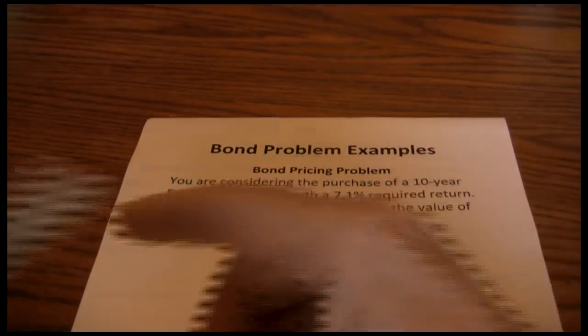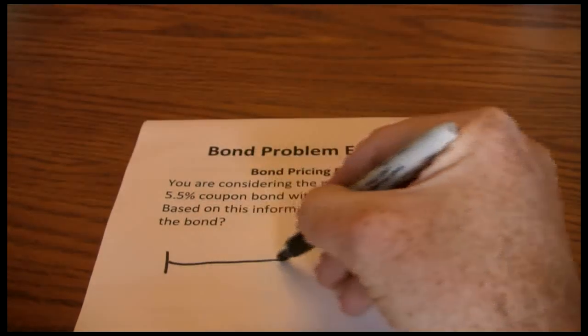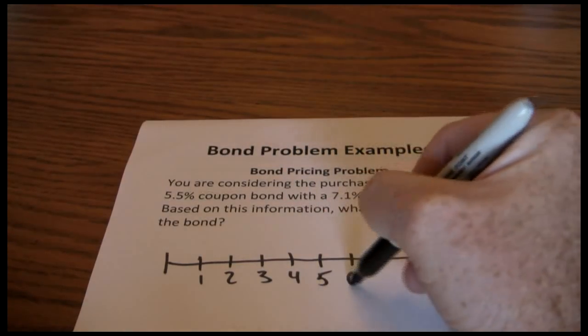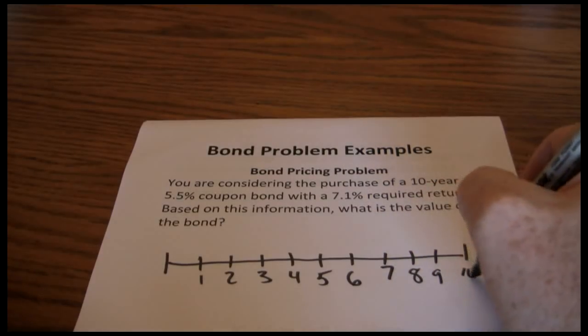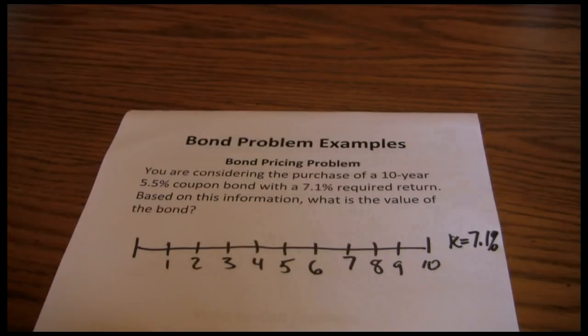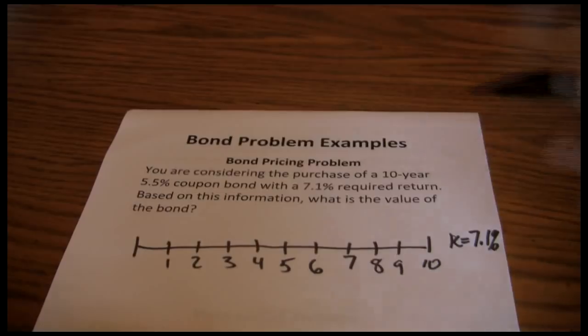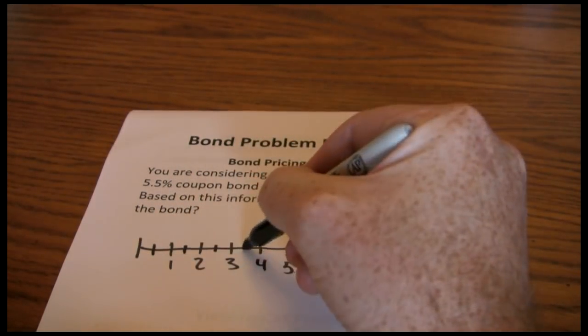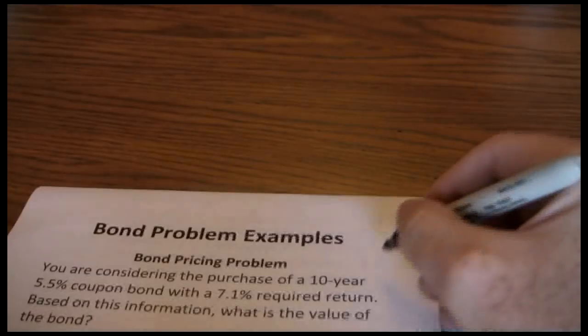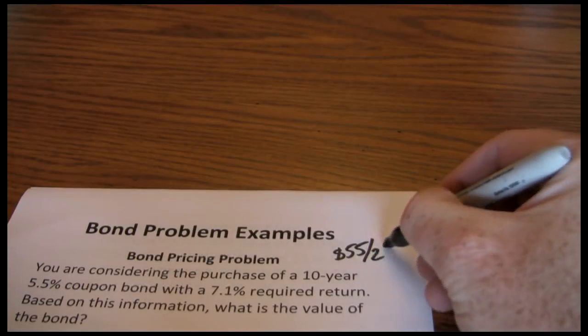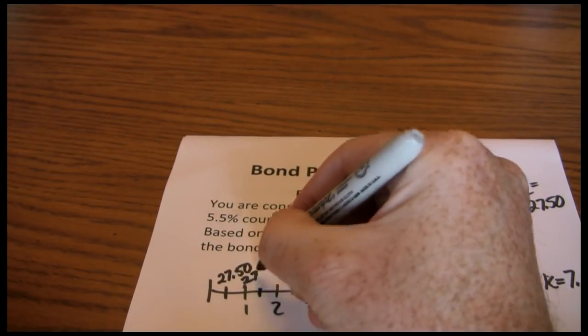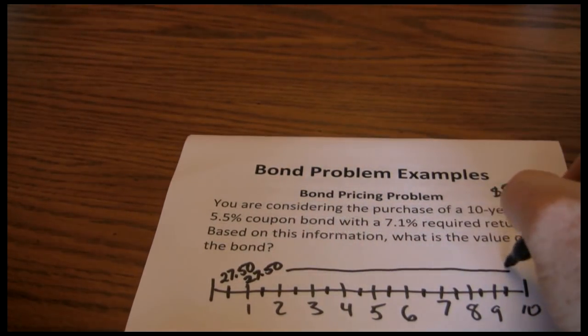So if we want to look at a timeline for this bond. Our required return is 7.1%. Each year we're going to receive $55, but we said that's going to be split semi-annually, so we're going to get two payments each year. 55 divided by 2 is $27.50, so each six months we're going to get $27.50, all the way through to the end of year 10.